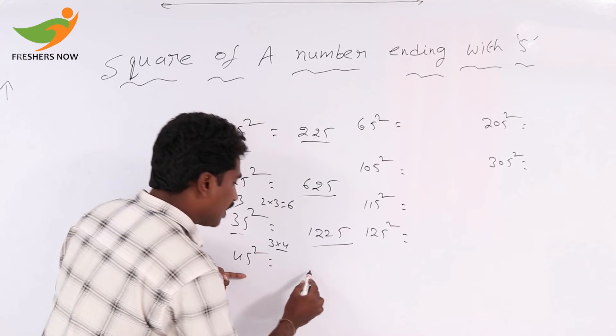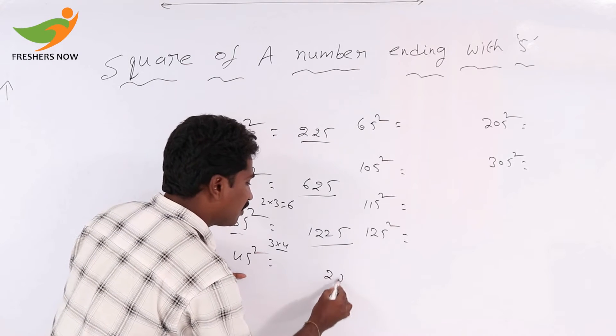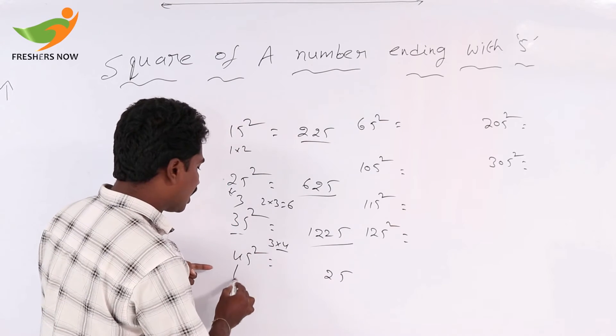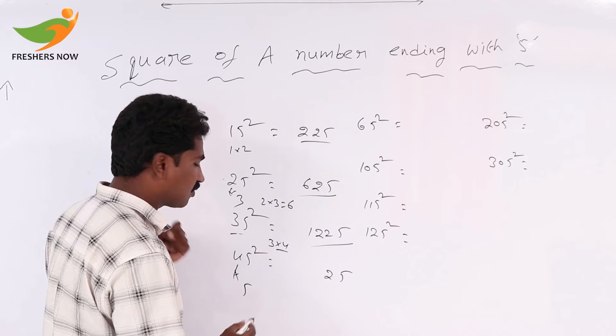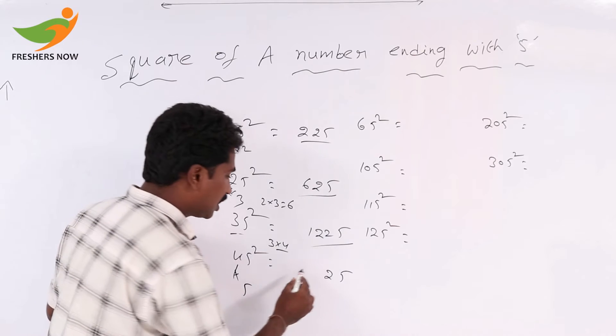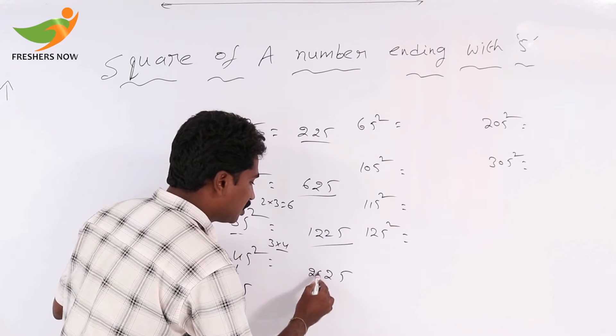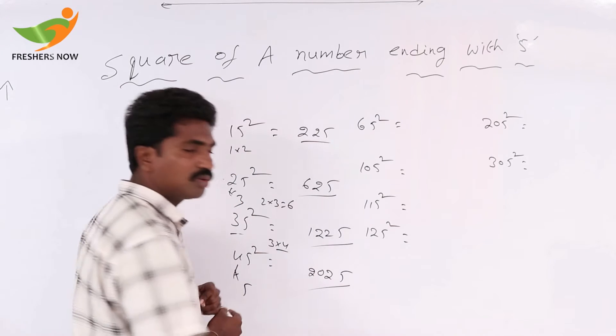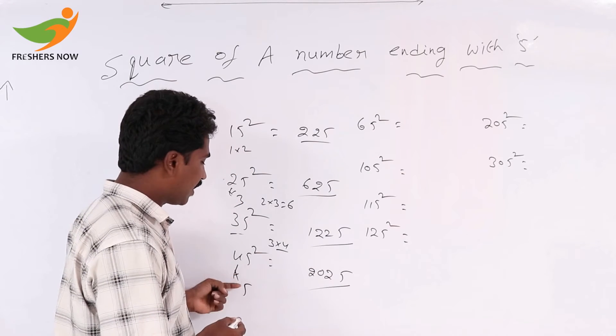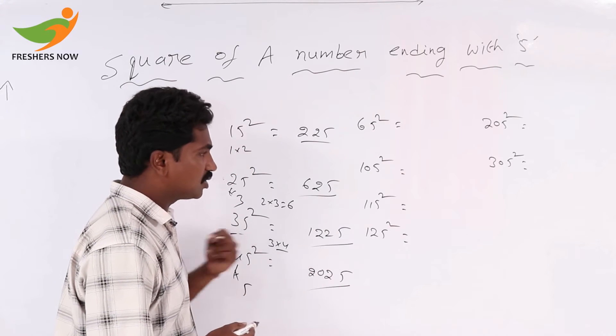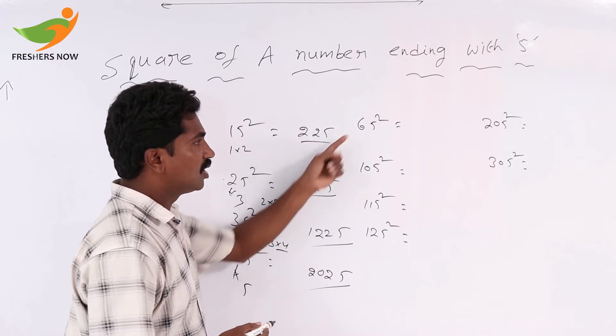For 45 square: 5 square equals 25. The tens digit is 4. The next number after 4 is 5, so 4 into 5 equals 20. So 45 squared equals 2025.